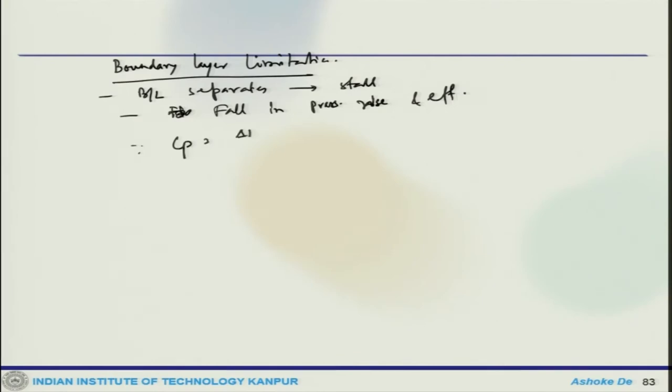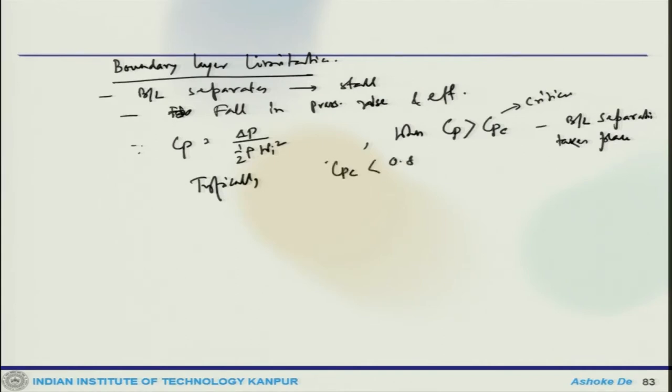Since Cp = Δp/(½ρwi²), when Cp greater than Cpc, which is the critical one, boundary layer separation takes place. Typical value of Cpc is 0.4. This can be prevented by proper blade design and suction in blades.